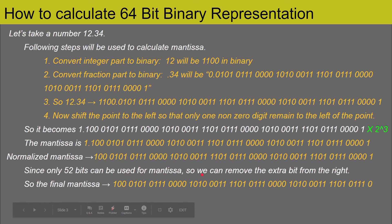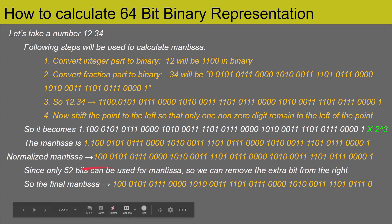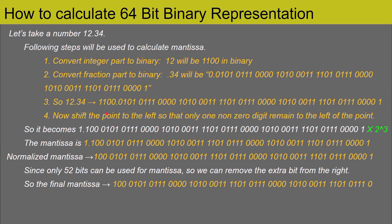Since only 52 bits can be used for the mantissa, we remove the extra bits from the right. The string of ones and zeros contains 56 bits, so we remove the last four digits from the right to get the final 52-bit mantissa. That is the mechanism for calculating the mantissa.